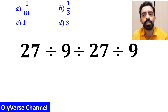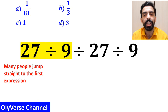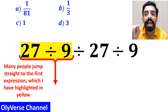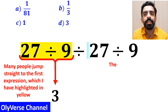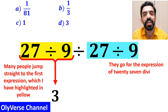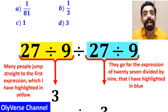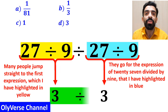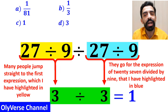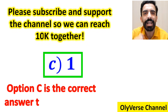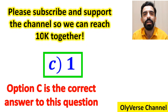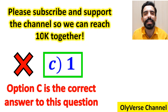At the beginning of solving this question, many people jump straight to the first expression 27 divided by 9, highlighted in yellow, and replace it with 3. In the next step, they go for the other expression of 27 divided by 9, highlighted in blue, and again replace it with 3. Finally, they conclude that 3 divided by 3 is equal to 1, and quickly say that option C is the correct answer. But that's not the correct answer to this question.